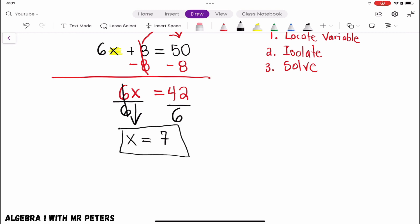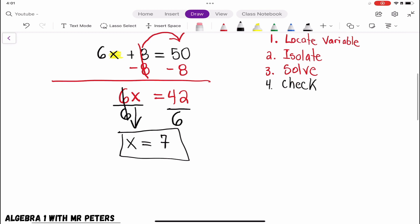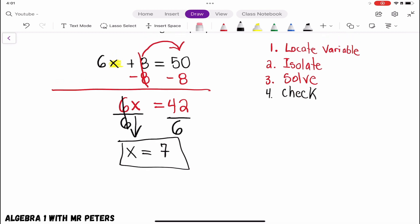Now, to make sure that we're right, the fourth and final step is just going to be the check. So what we want to do now is take that x and plug it back into the original equation. So I'm saying that 6 times 7 plus 8 is equal to 50. And if that left-hand side is equal to the right-hand side, we know that we did the right steps.